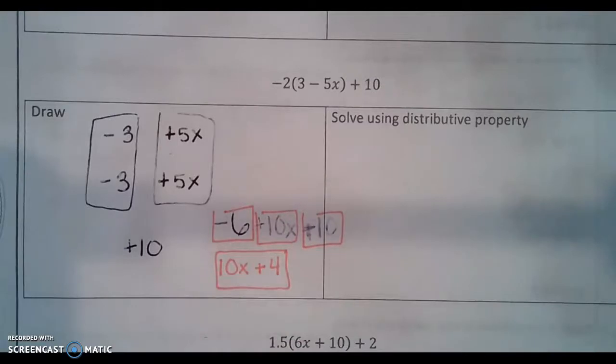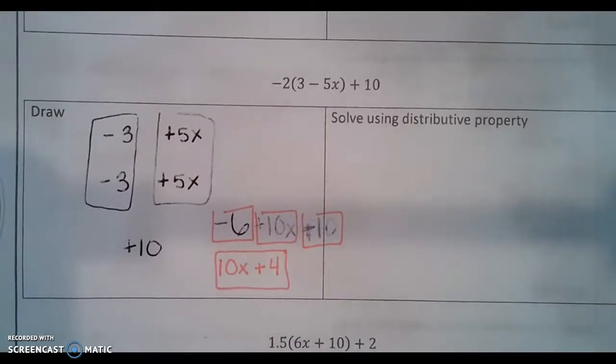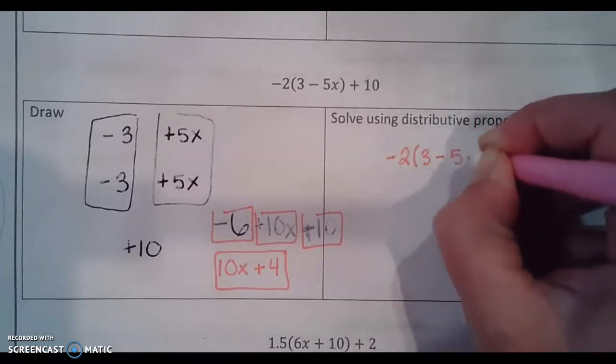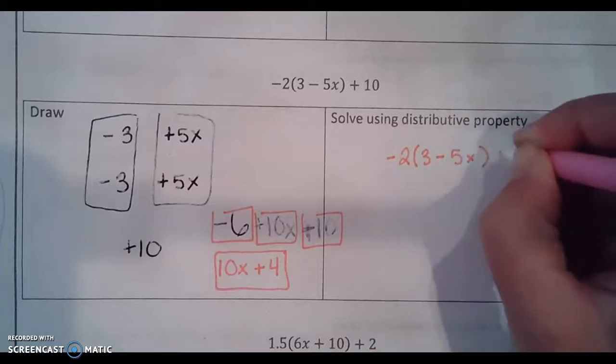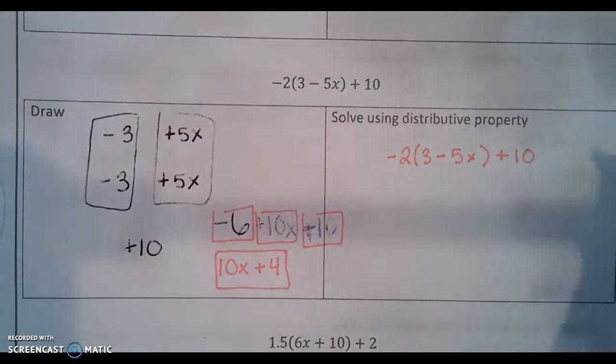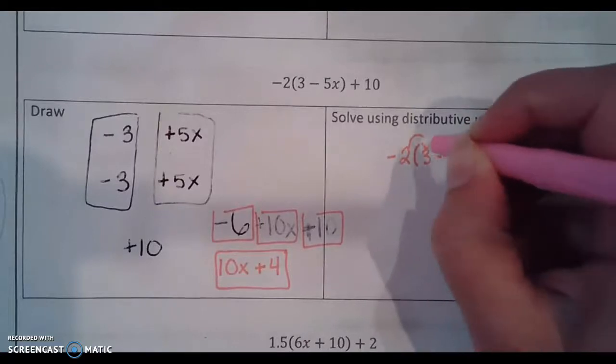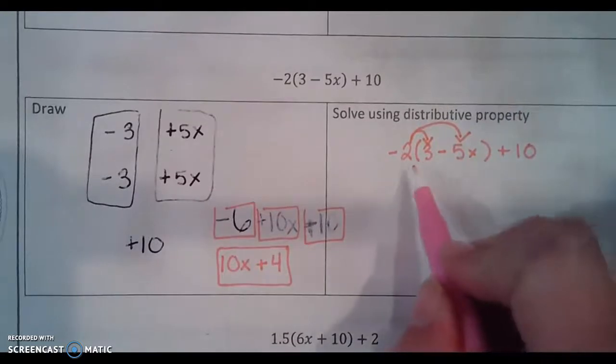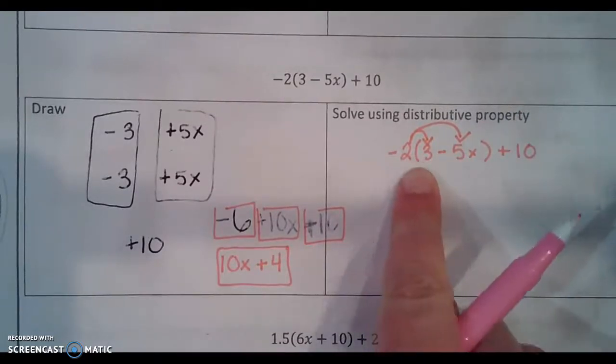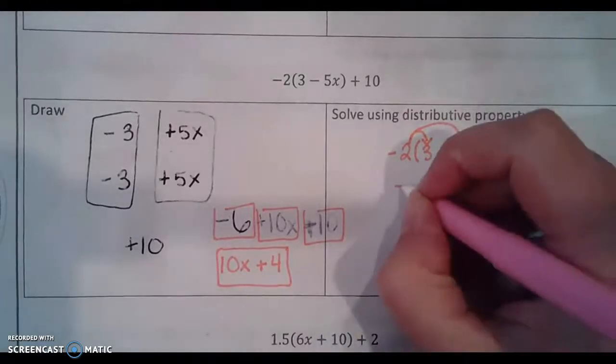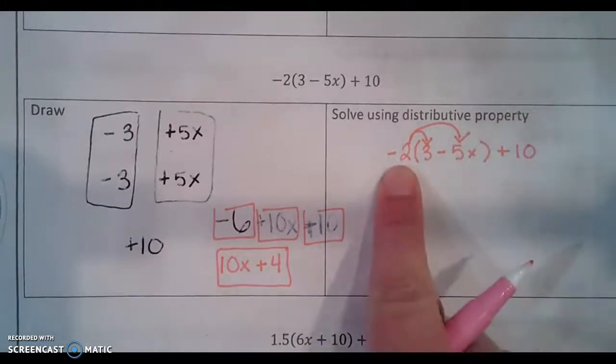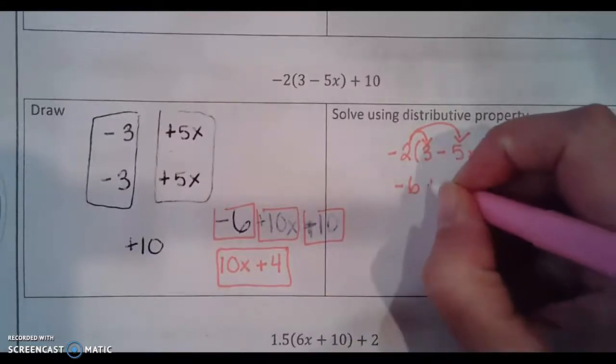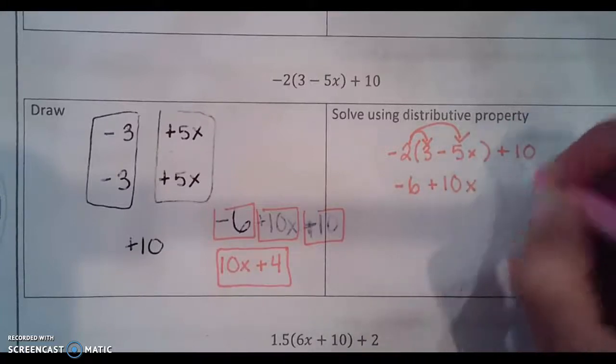So let's see what this would look like without a picture. First step. Write down your problem. Second step. Draw your arrows only to what is inside of the parentheses. Next step. Multiply. Negative 2 times 3 is negative 6. Negative 2 times negative 5x is positive 10x. Bring down my plus 10.